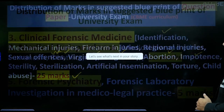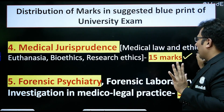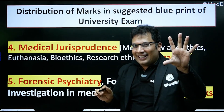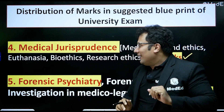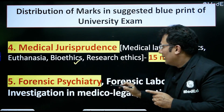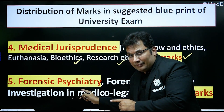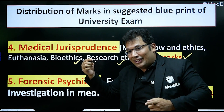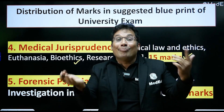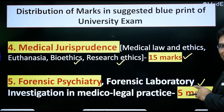Medical jurisprudence is around 15 marks. Important topics are medical negligence — civil and criminal — euthanasia, mercy killing, bioethics and principles, and research ethics. Forensic psychiatry covers delusions, hallucinations, true insanity, feigned insanity, impulse disorder, and McNaughton's rules, and is worth around 5 marks.